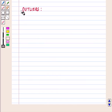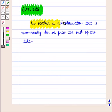And lastly we are going to discuss outliers. Since we know that an outlier is an observation, i.e., numerically distant from the rest of the data.